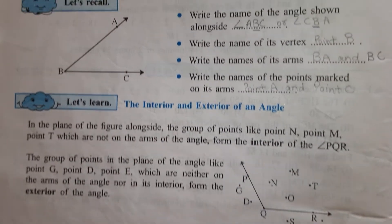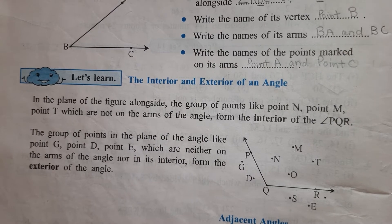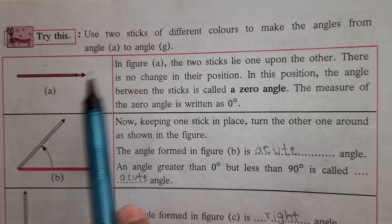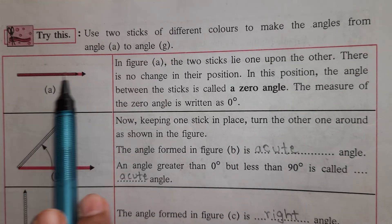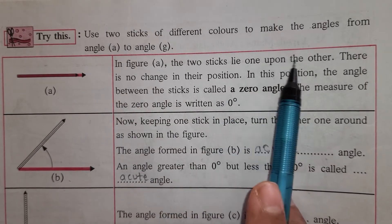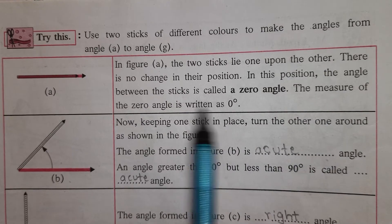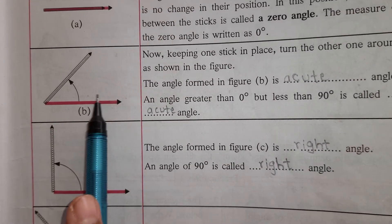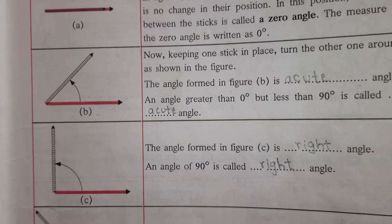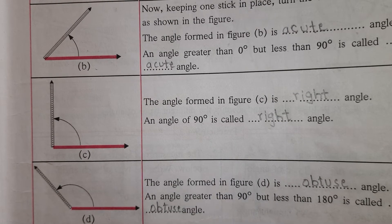There are seven types of angles which we have already studied in our sixth standard. First type is zero angle — when both arms lie one upon the other, the measure is zero degrees. Then acute angle — greater than zero, less than 90. Then right angle — exactly 90 degrees.